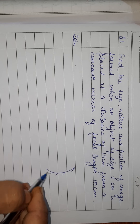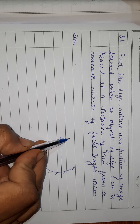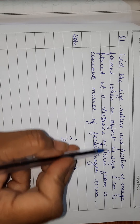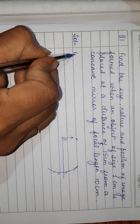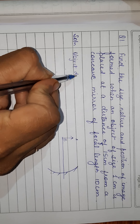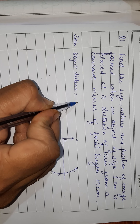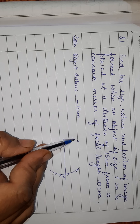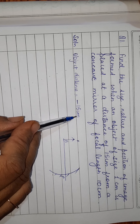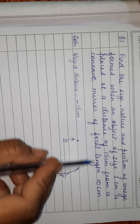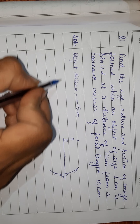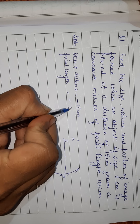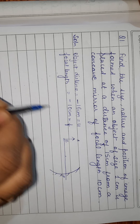We always keep the object towards the left hand side. So object distance U is 15 centimeter — it is minus, because object distance is always negative for both concave and convex mirrors. The focal length: focus also lies towards the same side, so focal length F is also negative — minus 10.